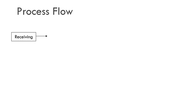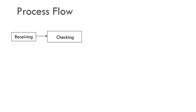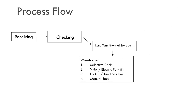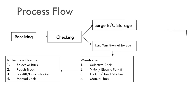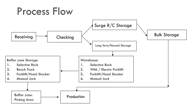The process flow covers receiving, checking, and long-term or normal storage in the warehouse using: 1. Selective rack, 2. VNA electric forklift, 3. Forklift and hand stacker, and 4. Manual jack. Buffer zone storage uses selective rack, reach truck, forklift, and annual jack for surge and bulk storage, production buffer zones, picking areas, finished goods storage, and shipping.